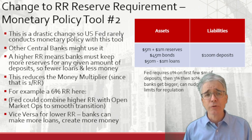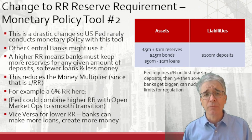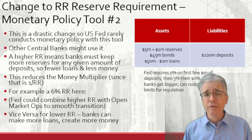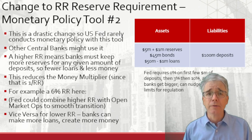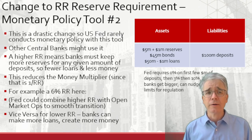A higher reserve ratio means banks must keep more reserves for any given level of deposits. So therefore, there'll be fewer loans, less money, and a smaller money multiplier. Because remember, the money multiplier is 1 over RR.